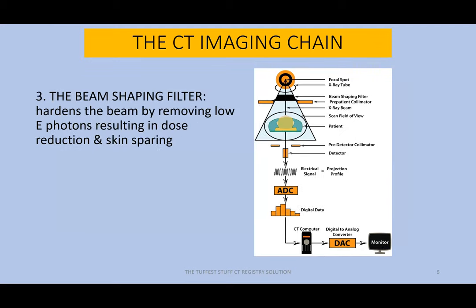The beam shaping filter is component number three. Test answer: its function is to harden the beam by removing low-energy photons. Test answer: this will result in dose reduction by way of skin sparing. The beam shaping filter further shapes the beam after the generator's mono-energetic output by removing low-energy photons. The whole idea is to save dose — we eliminate from the photon shower those X-ray photons that never had a chance to penetrate the part, absorbing them out with the filter. That makes the beam even more mono-energetic, which is a good thing from an imaging quality perspective.